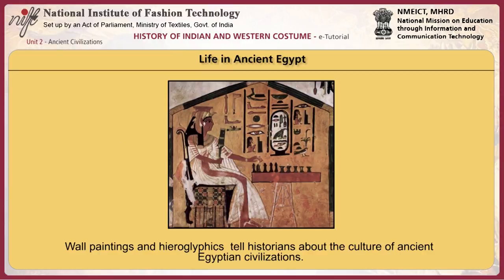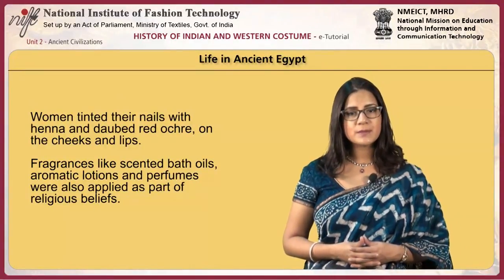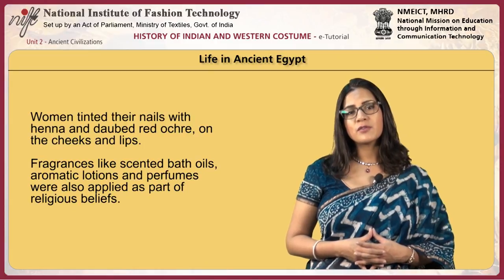Most Egyptians practiced daily grooming to varying degrees. The hot humid climate made bathing regularly and personal hygiene an important concern for all but the very poor. Upper class Egyptians shaved off all body hair and used a variety of moisturizing oils and sunscreen creams. Both men and women used cosmetics especially to enhance the eyes and protect from the glare of the sun. Eyeliner was made of powdered black coal and lead ore. Eyeshadows were created by pulverized minerals like malachite, lapis lazuli or turquoise. Women tinted their nails with henna and daubed red ochre on their cheeks and lips. Fragrances like scented bath oils, aromatic lotions and perfumes were also applied as part of religious beliefs.